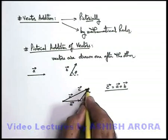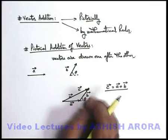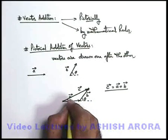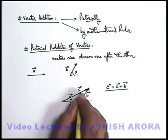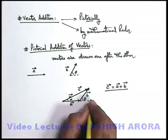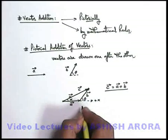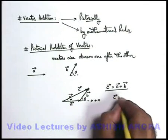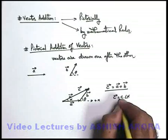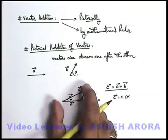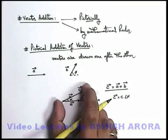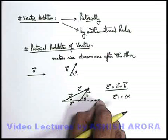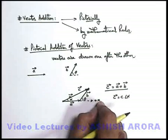The magnitude of C vector is given by the length of this arrow, and the angle alpha which it makes with the positive direction of the x-axis. So C vector can be written as C angle alpha, where C is the magnitude or length of this vector and alpha is the angle which it makes with the positive direction of the x-axis.